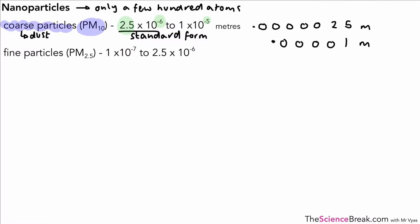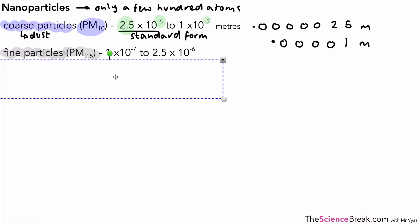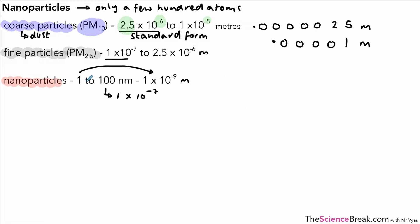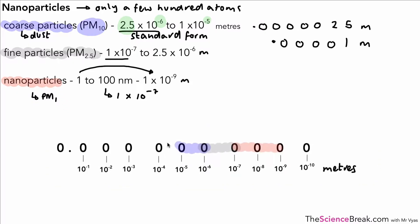We also have fine particles, referred to as PM2.5, with their own size range. Then we have nanoparticles, which are between 1 to 100 nanometers — 1 nanometer is 1 × 10⁻⁹ meters, and 100 nanometers is around 1 × 10⁻⁷ meters. The larger nanoparticles overlap in size with the smaller fine particles. Our nanometers can also be referred to as PM1.